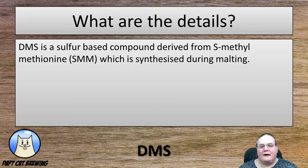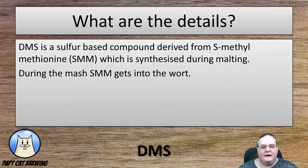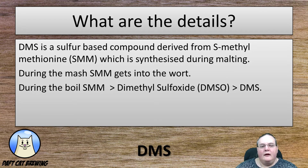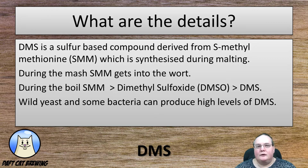DMS is a sulfur-based compound derived from SMM, which is synthesized during the malting process. During the mash, the SMM gets into the wort. Then during the boil, that SMM undergoes conversion into DMSO, which then turns into DMS later on. Wild yeast and some bacteria can also produce high levels of DMS in your beer.